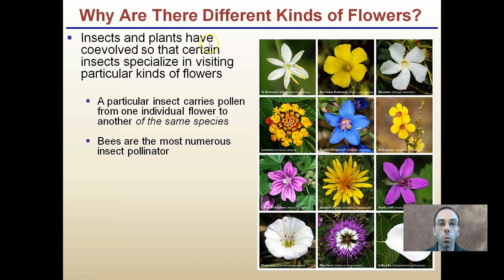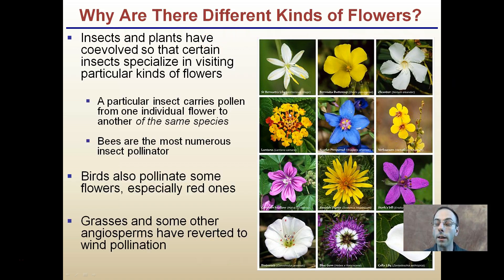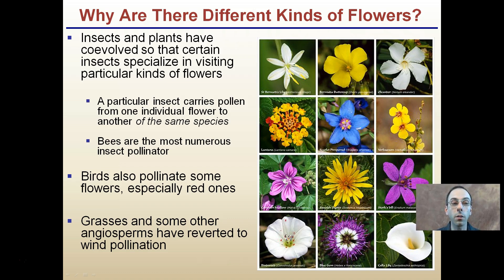To start with, why are there different kinds of flowers? This pertains to angiosperms and the pollination process. Insects and plants have co-evolved so that certain insects specialize in visiting particular kinds of flowers. A particular insect carries pollen from one individual flower to another of the same species. Bees are the most numerous insect pollinator. Birds can also pollinate some flowers, especially red ones.